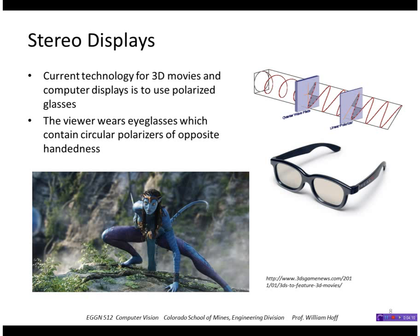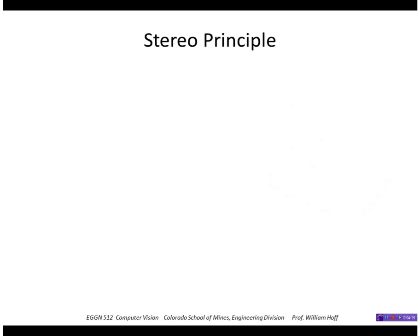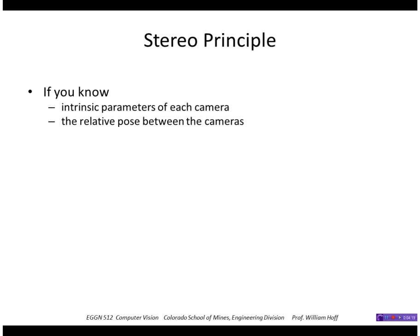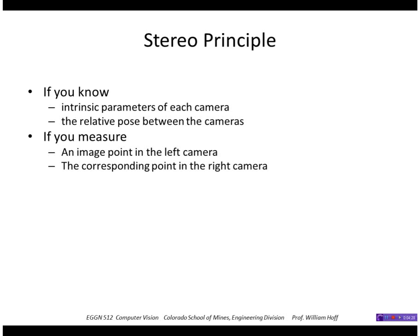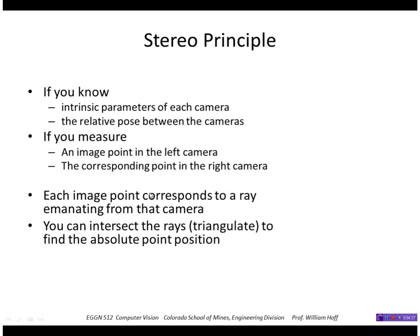In terms of deriving stereo information, the principle is fairly simple. If we know the intrinsic parameters of each camera and the relative pose between the cameras, and we measure a point in one camera and the corresponding point in the other camera, those points correspond to a ray emanating from each camera. So we can intersect those rays to find the absolute point position.